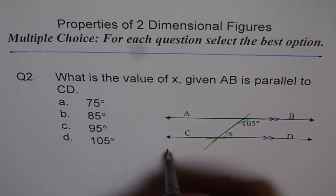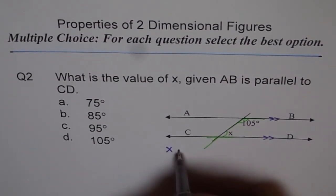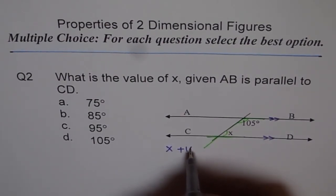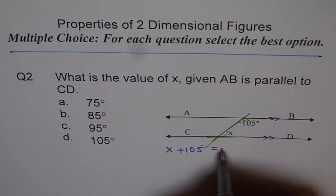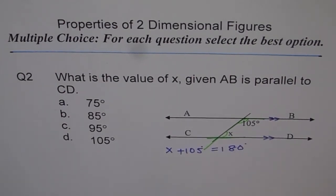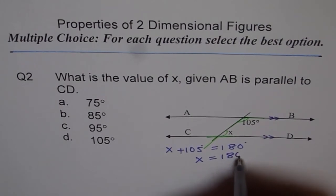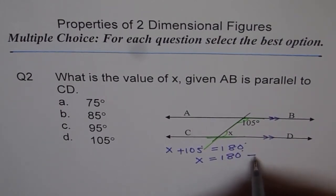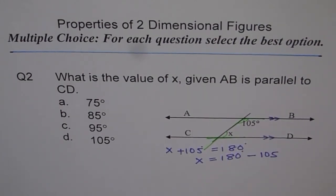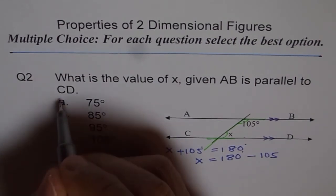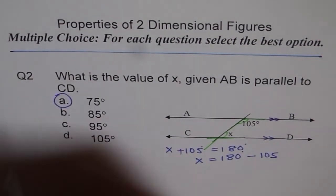So the sum of X plus 105 degrees should be 180 degrees. So X is equal to 180 degrees minus 105. That is your solution — X is 75 degrees.